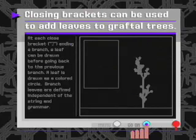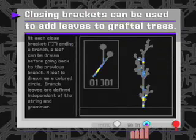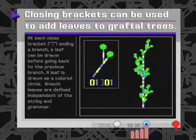Although the graftal game applies leaves randomly to its trees, when you program a graftal, you can use the closing brackets to add leaves to the end of your branches.